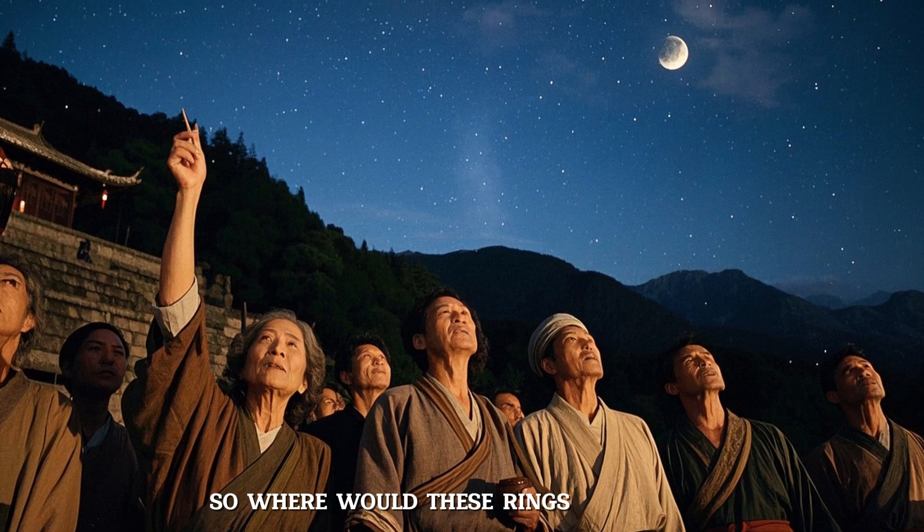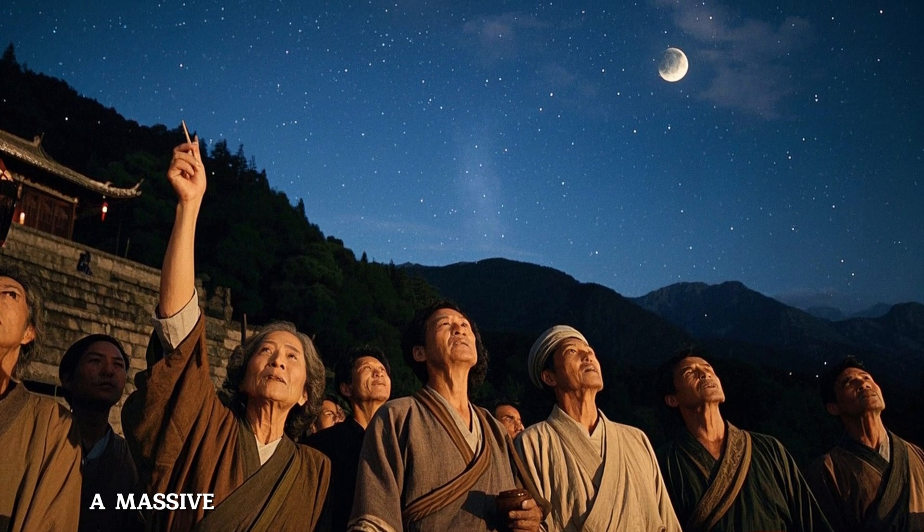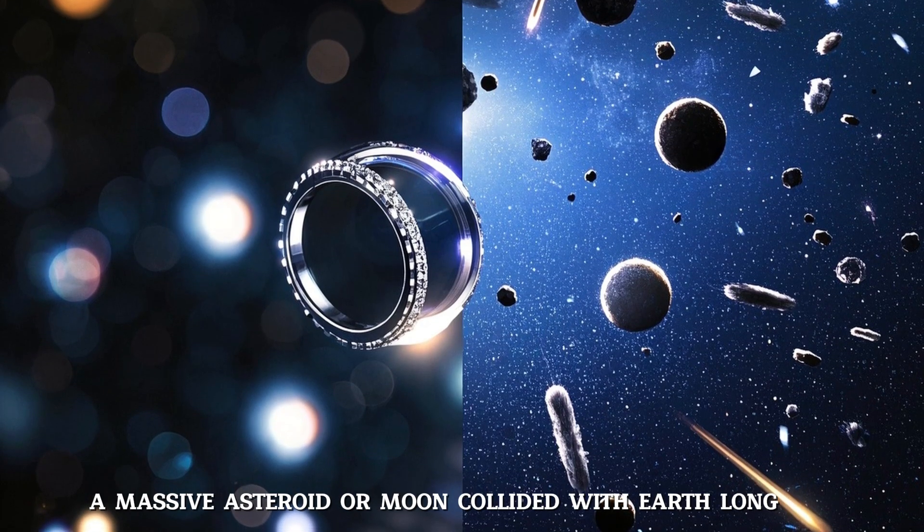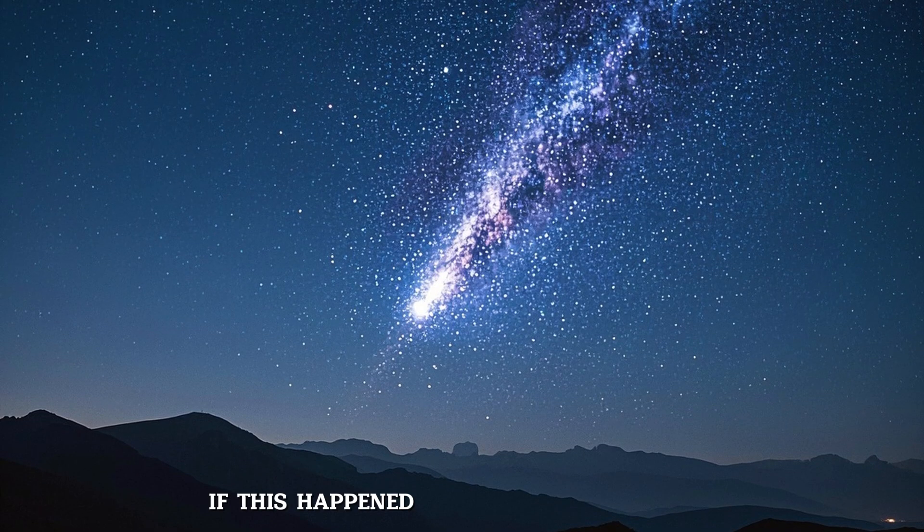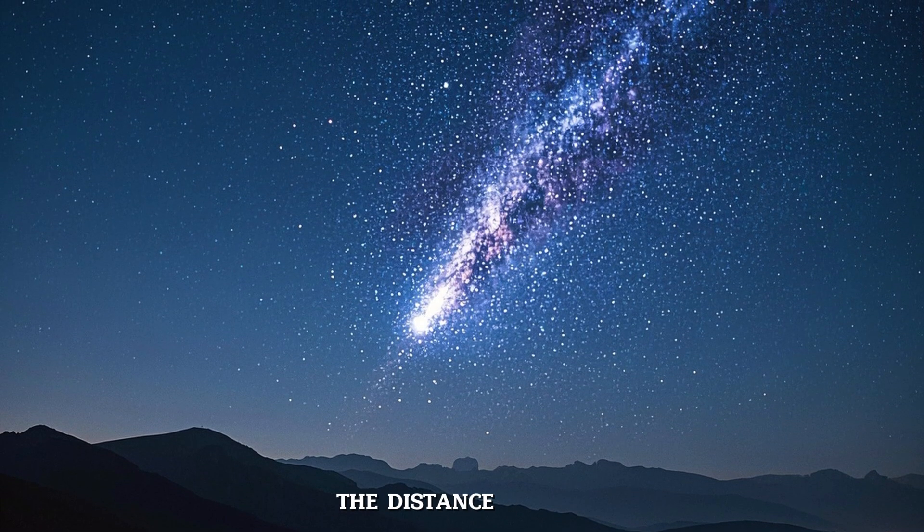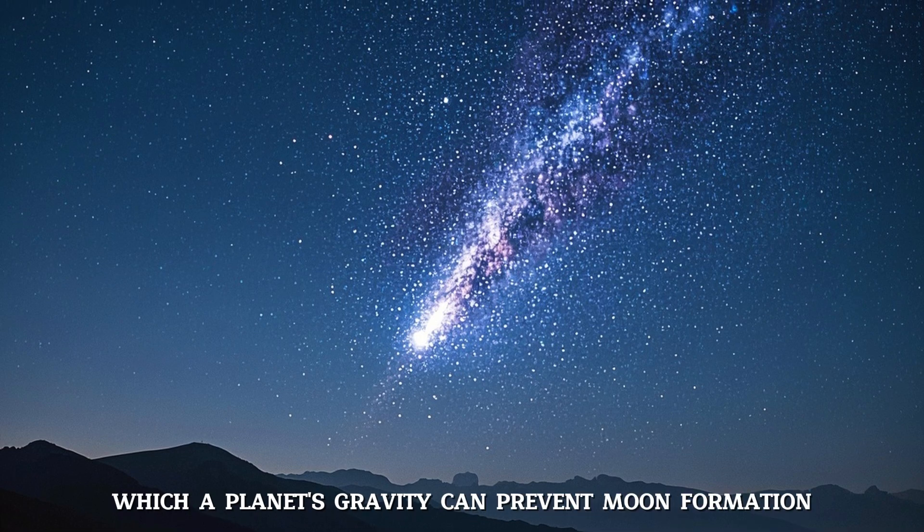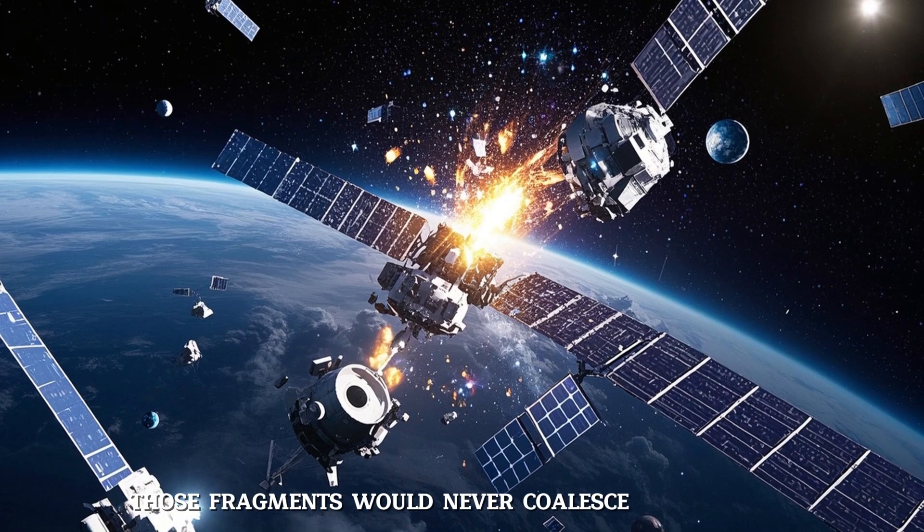So where would these rings come from? One theory. A massive asteroid or moon collided with Earth long ago, breaking apart and forming a debris field caught in orbit. If this happened outside the Roche limit, the distance within which a planet's gravity can prevent moon formation, those fragments would never coalesce into a moon, and instead form stable rings.